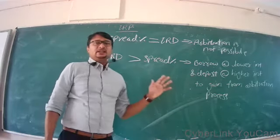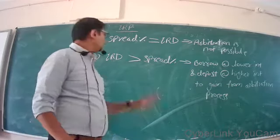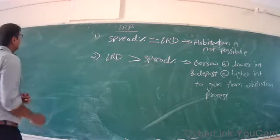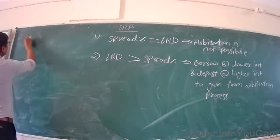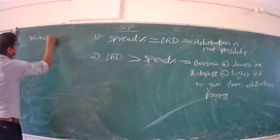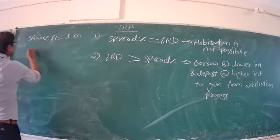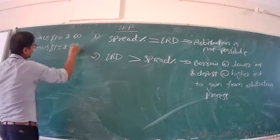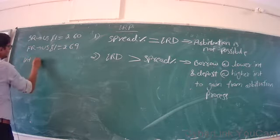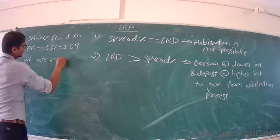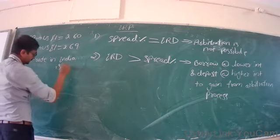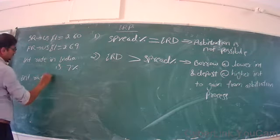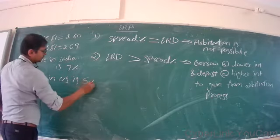So those two were the earlier illustrations and we have proved them. Today, vice versa — if Spread Percentage is greater than Interest Rate Differential, we need to illustrate that. The given data: Spot Rate is US Dollar 1 = Rs. 60, and the likely forward rate after one year for US Dollar is Rs. 69. Interest rate in India is 7%, whereas interest rate in US is 5%.